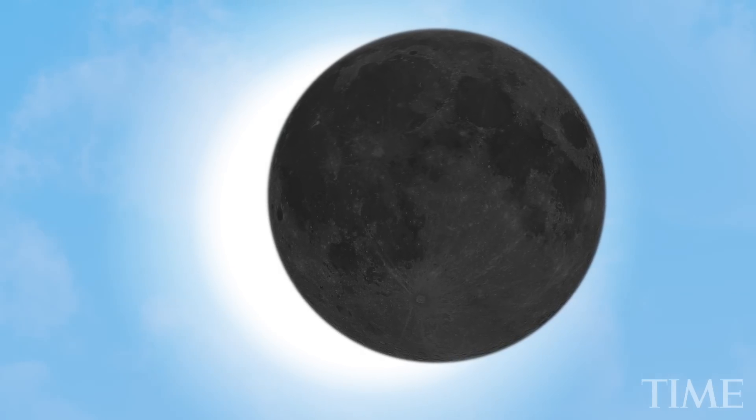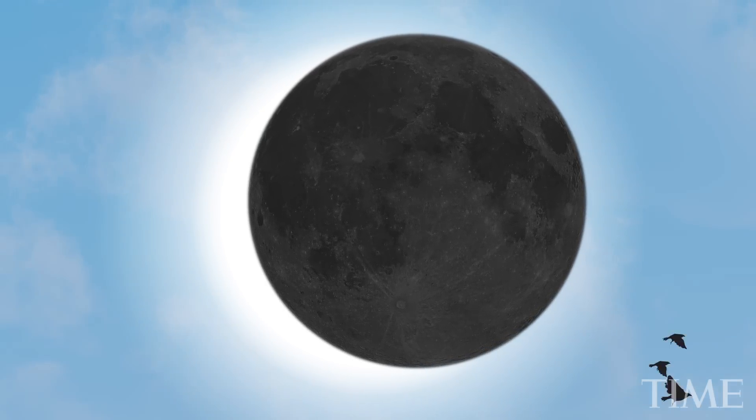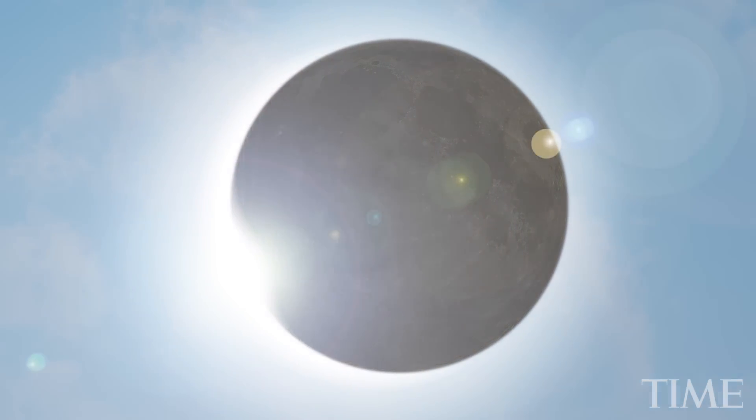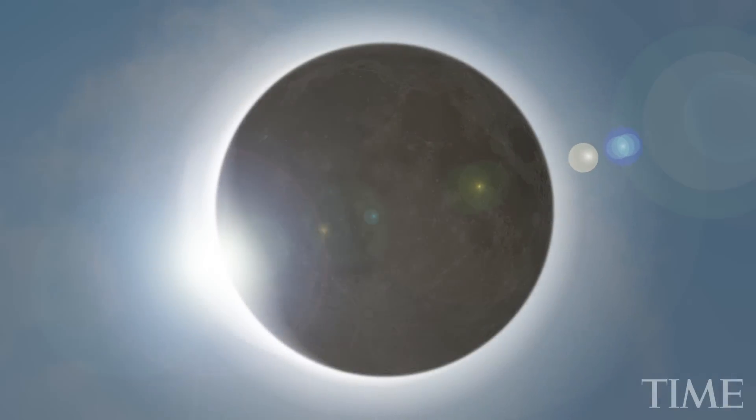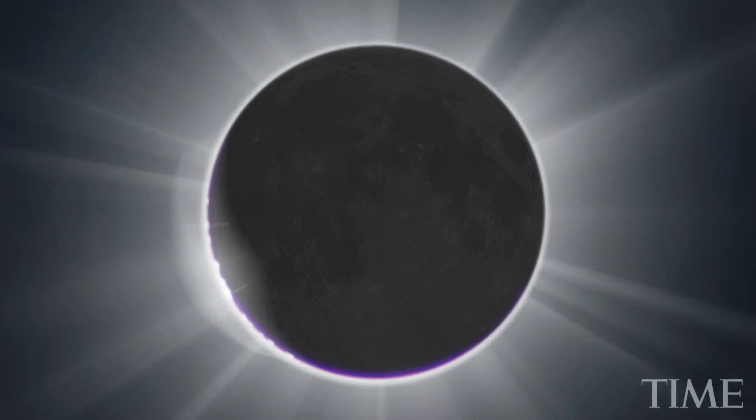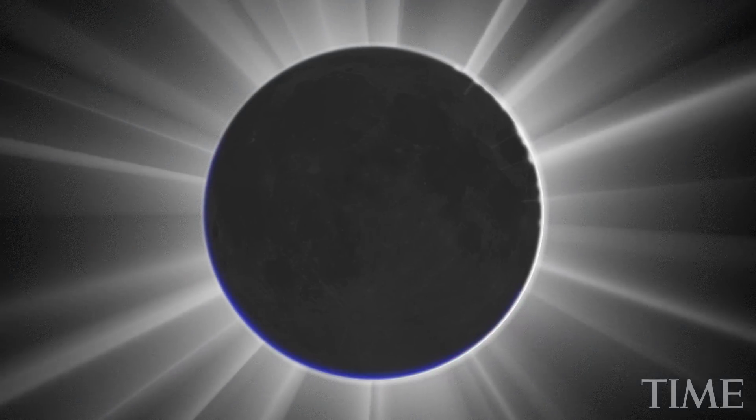Solar eclipses occur when the Moon passes directly between the Earth and the Sun, blocking solar light. The eclipse arriving April 20th is a rare mixture of every type of eclipse.